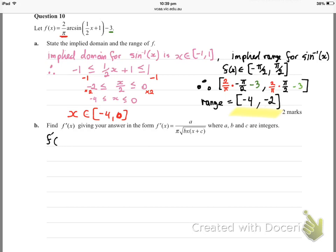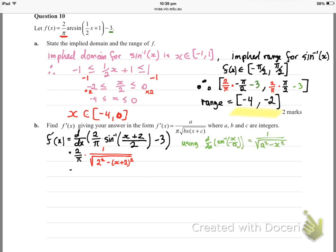Part b says let's find the derivative of that and express our answer in this form. Off we go. Let's differentiate our function of x. I'm drawing on the rule for the derivative of the inverse sine. That comes from this rule which is on your formula sheet - that's your basic rule for the derivative of an inverse sine function.